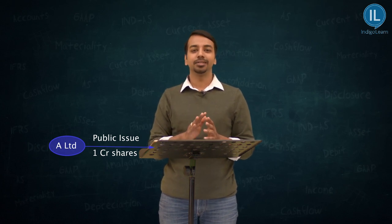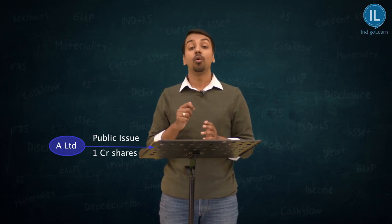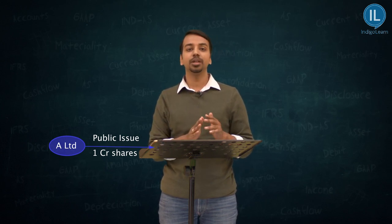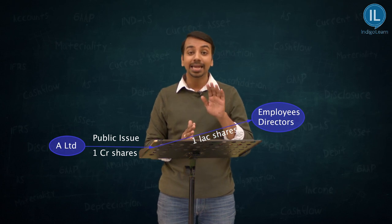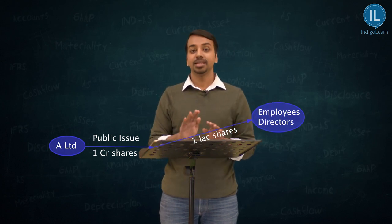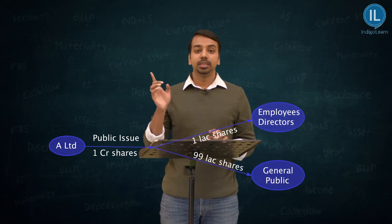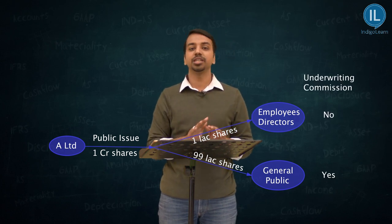Friends, our company A Limited had issued 1,000,000 shares to the public. Say for example, the employees and directors — those internal to the company — approached management and said that out of these 1,000,000 shares, they are willing to take 1,000,000 shares. If 1,000,000 shares are being issued to employees and directors, the company will issue only 99,000,000 shares to the public. In such a case, the guidelines are very clear that underwriting commission should be paid only on those 99,000,000 shares issued to the public. On the portion not issued to the public, underwriting commission is not payable.